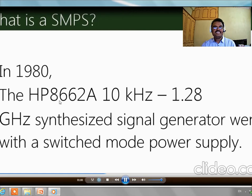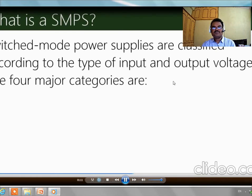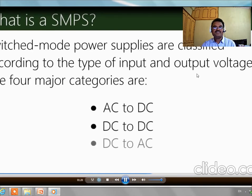In 1980, the HP 8662A 10 kHz to 128 GHz synthesized signal generator went with a switch mode power supply — SMPS was used in this generator. According to the type of input and output devices, SMPS is classified according to input and output voltages. The major categories are AC to DC, DC to DC, DC to AC, and AC again.